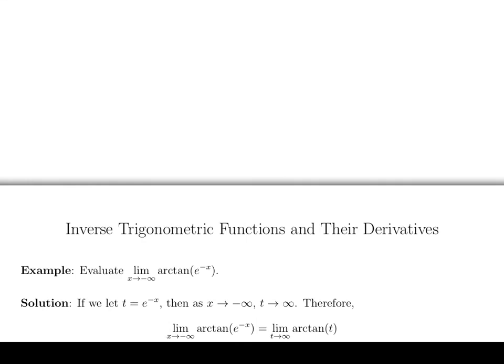So then we can change this limit, this x limit, to a t limit by making this substitution. Since x goes to minus infinity, t is going to infinity, then we change it to this limit here.